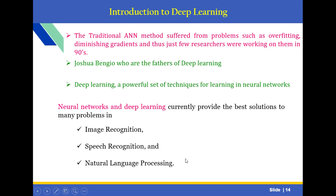A small introduction to deep learning: Traditional artificial neural network methods suffered from problems such as overfitting and diminishing gradients, and only a few researchers were working on them in the 90s. Deep learning is a powerful set of techniques for learning in neural networks. Neural networks and deep learning currently provide the best solutions to many problems in image recognition, speech recognition, and natural language processing. In the next session, we are going to discuss about introduction to deep learning. Thank you.